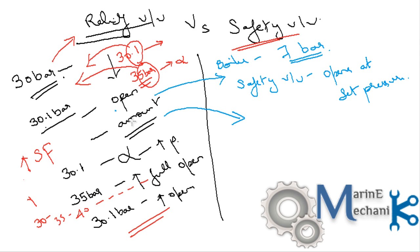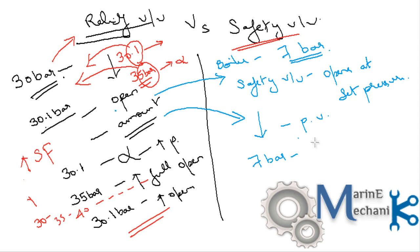The safety valve also has a spring and valve housing, but the amount of opening is huge — whether at 7 bar, 7.1, or 7.5, the opening is large enough to create sufficient pressure drop within the pressure vessel. When the safety valve opens at 7 bar in a boiler, it stays open until a sufficient pressure drop is achieved inside the boiler so it can operate safely, and will reseat at approximately 6.7 bar or lower.